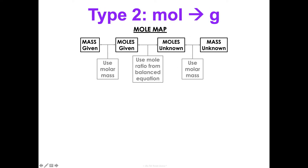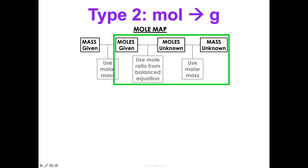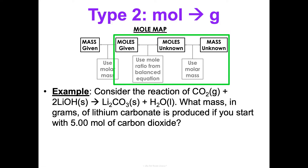Now let's move on to type two: moles to grams. I give you moles and I want to know the mass of something. So it's going to be a two-step problem — we're going to have to use a mole ratio to get to moles and then use a molar mass to get from moles to mass. Consider the reaction of carbon dioxide and lithium hydroxide to make lithium carbonate and water. What mass in grams of lithium carbonate is produced if you start with five moles of carbon dioxide?